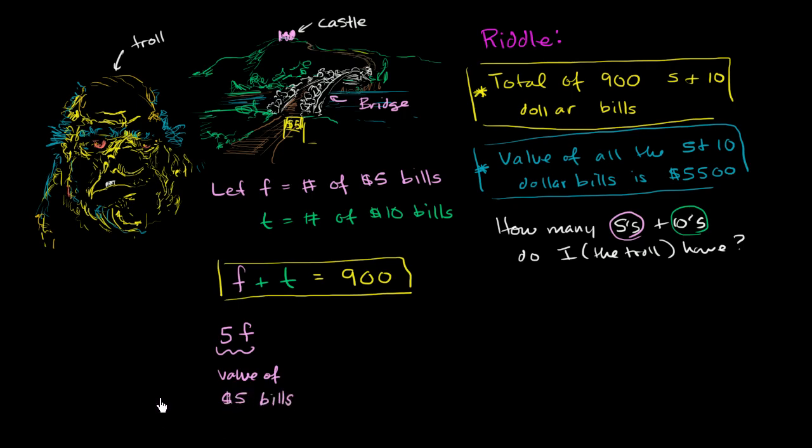Now, same logic, what's the value of the $10 bills? Well, the value of the $10 bills is just going to be 10 times however many bills I have. So what's going to be the total value of my bills? What's going to be the value of the $5 bills plus the value of the $10 bills? And he tells me what that total value is. It's $5,500. So if I add these two things, they're going to add up to be $5,500. So this second statement, we can represent mathematically with this second equation right over here.